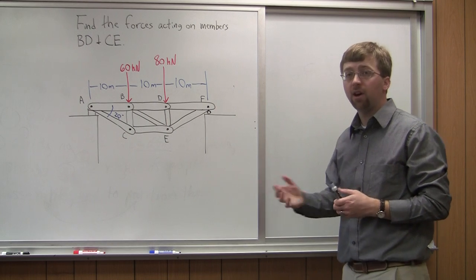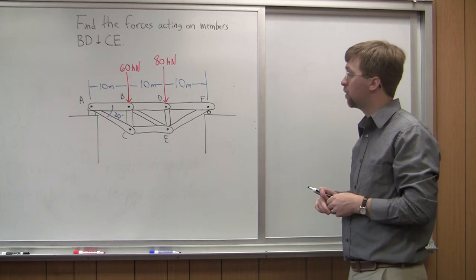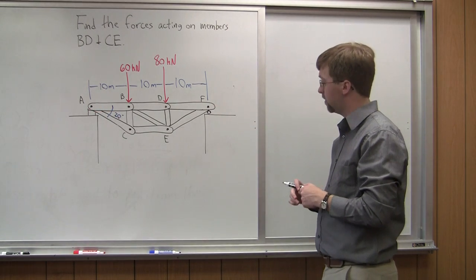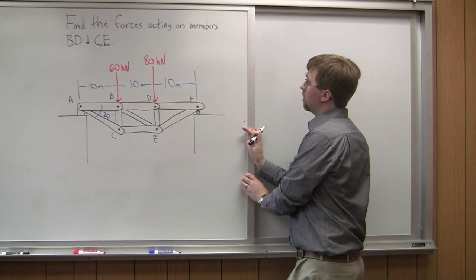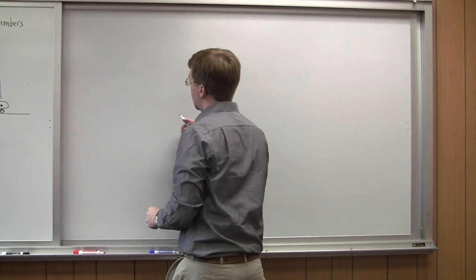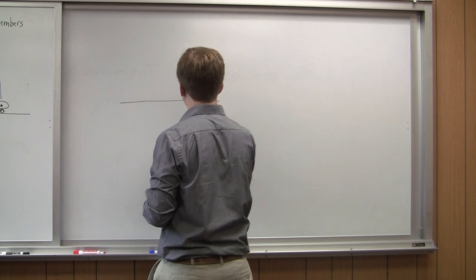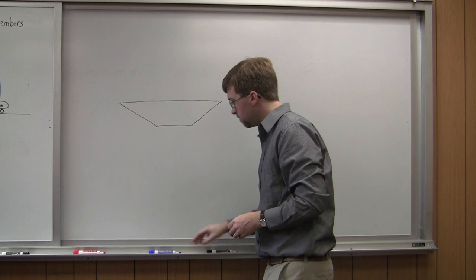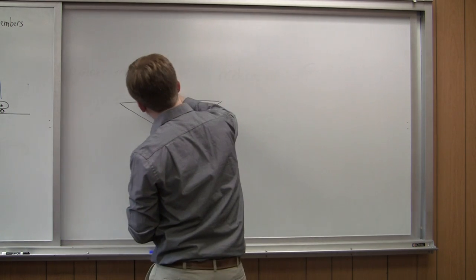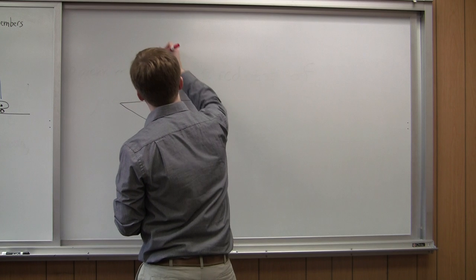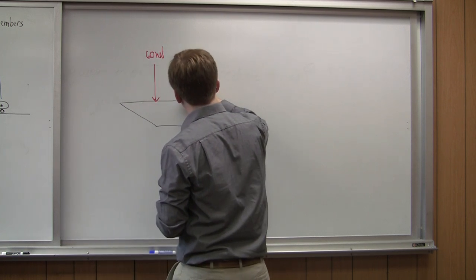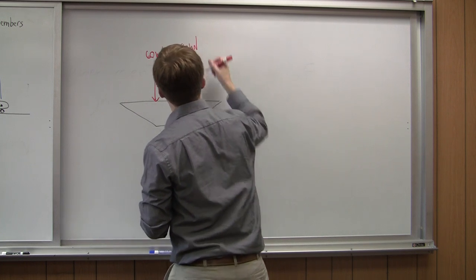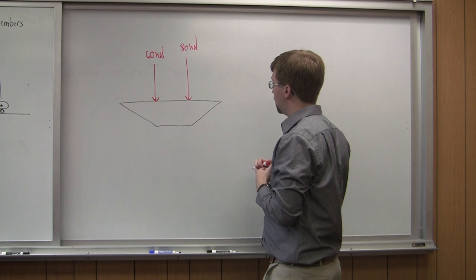Before we do that, we need to figure out the reaction forces supporting this truss at point A and point F. To do that, we're going to treat the whole bridge as a single rigid body. We've got a 60 kilonewton force and an 80 kilonewton force applied to it, and reaction forces on either side.